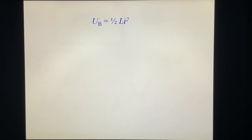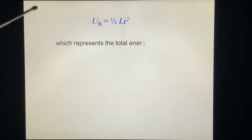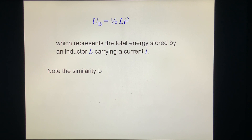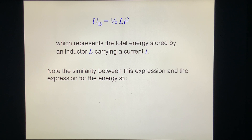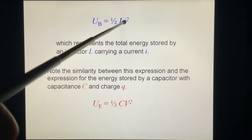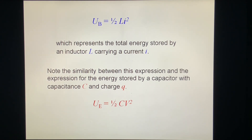So the total energy stored in the coil is U = ½LI², where L is the inductance and I is the current through the inductor. This represents the total energy stored by an inductor carrying current I. Note the similarity with the energy stored by a capacitor: U_E = ½CV² = Q²/2C.